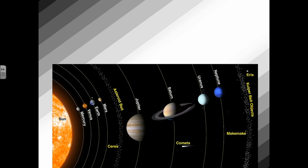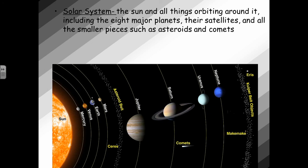Looking at the picture below, you can see our solar system. Well, our solar system has our sun in the center, and then all of our planets, asteroids, comets, meteors, and any other space debris orbit around our sun. So, our solar system is basically the sun and all the things orbiting it, including the eight major planets, their satellites, and all the small pieces such as asteroids and comets.